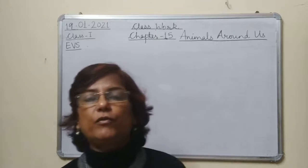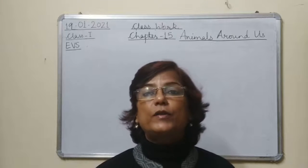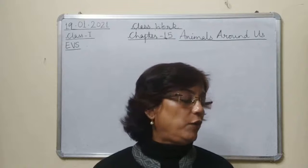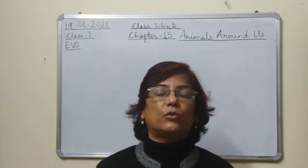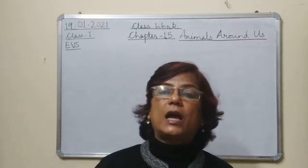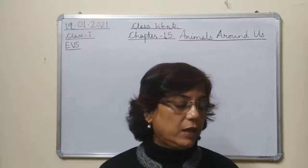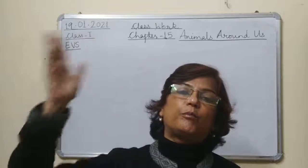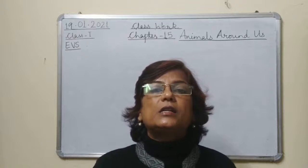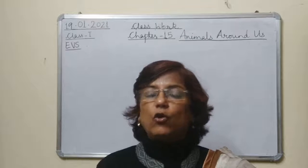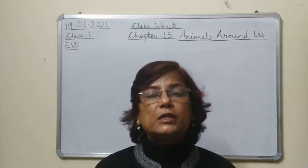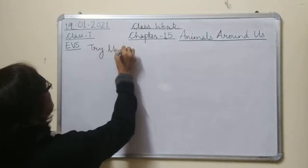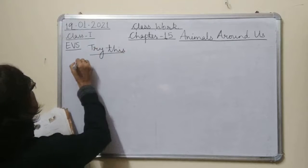Now we will start with the exercise. Try this — page number 95. Name one huge animal which used to be present on this earth millions of years ago. Matlab millions of years pehle ek bhoat bada sa animal tha joki earth pe present tha. I am sure you all know about this animal — it is dinosaur. First answer is dinosaur.